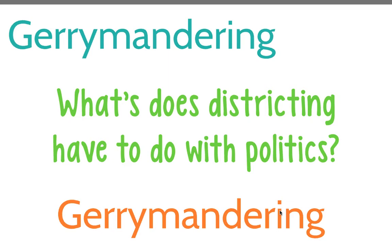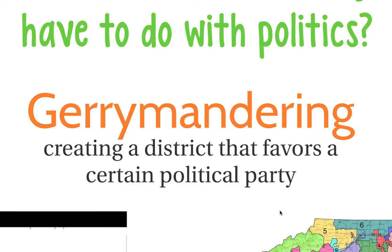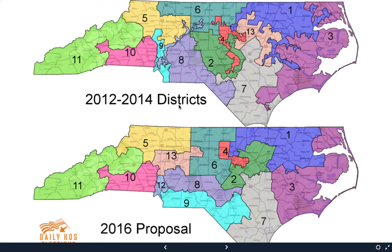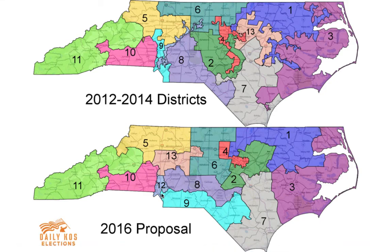So what does districting have to do with politics? There's this process called gerrymandering — gerrymandering is when you create a district that favors a certain political party. It essentially neutralizes one party and guarantees the other will win that district almost every time. If you look at North Carolina's 2012 and 2014 districts, you can see this oddly-shaped District 12, which ran from Charlotte all the way up into Greensboro and was very narrow. The districts were later changed as ordered by the Supreme Court because they were not fair and some voters felt like they were being taken advantage of.